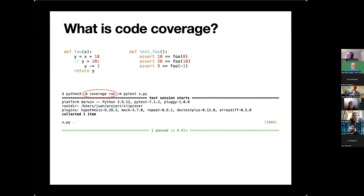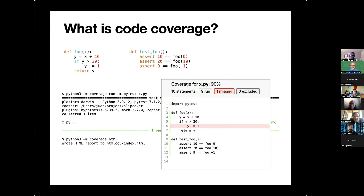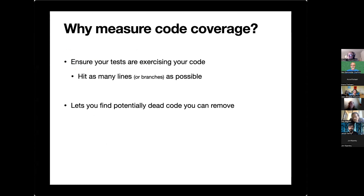You could use the coverage package for this. You could preload coverage, see coverage from PyTest — your tests run normally. Then you ask coverage for a report. For example, asking for an HTML report, you might get a report showing that your tests are not testing the Y greater than 20 case. So that line that depends on it never gets executed. This is one good reason to measure code coverage — to guide your testing, to make sure your tests are exercising all the code and hitting as many lines as possible.